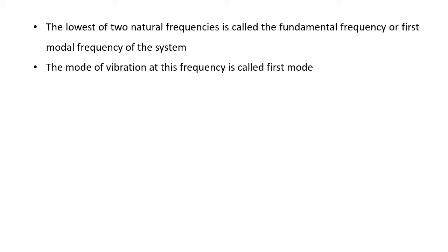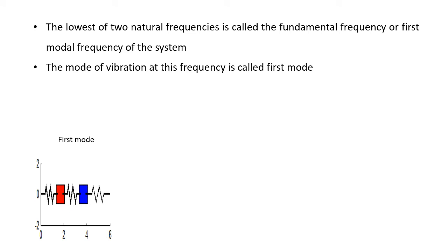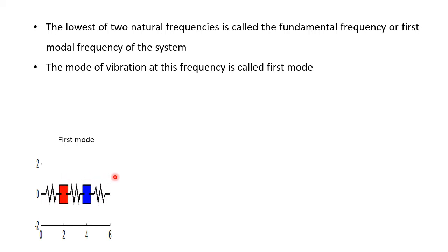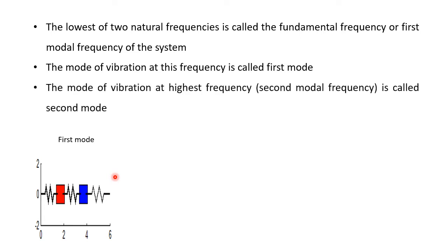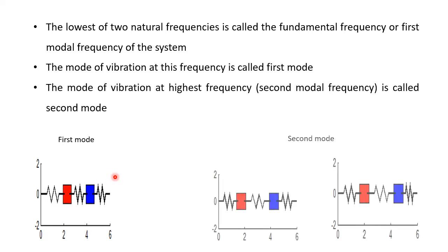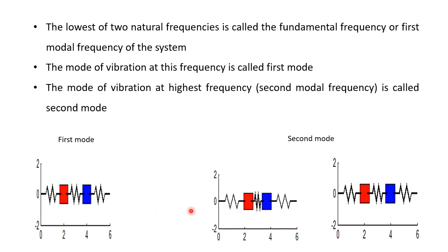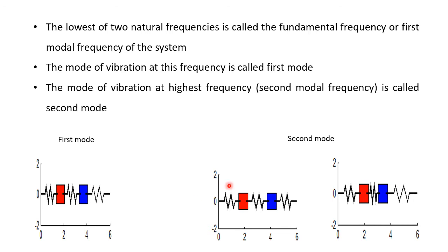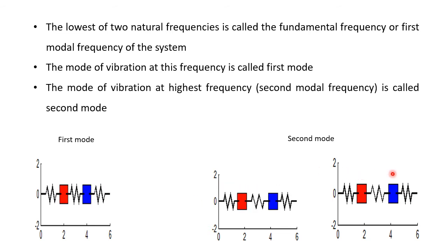If the system is vibrating at the first mode frequency, that vibration is called the first mode vibration of the system. You can see a figure showing the first mode vibration of a longitudinal vibration system, in which the red colored mass and blue colored mass are moving in the same direction.